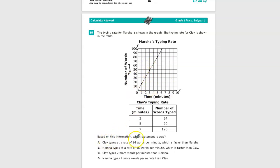We know that Clay types at a rate of 16 words per minute which is faster than Marsha. That might be possible, so I'll put a hashtag. Marsha types at 16 words per minute which is faster than Clay. Well, we know Marsha's not faster, so that's out. Sorry Marsha.